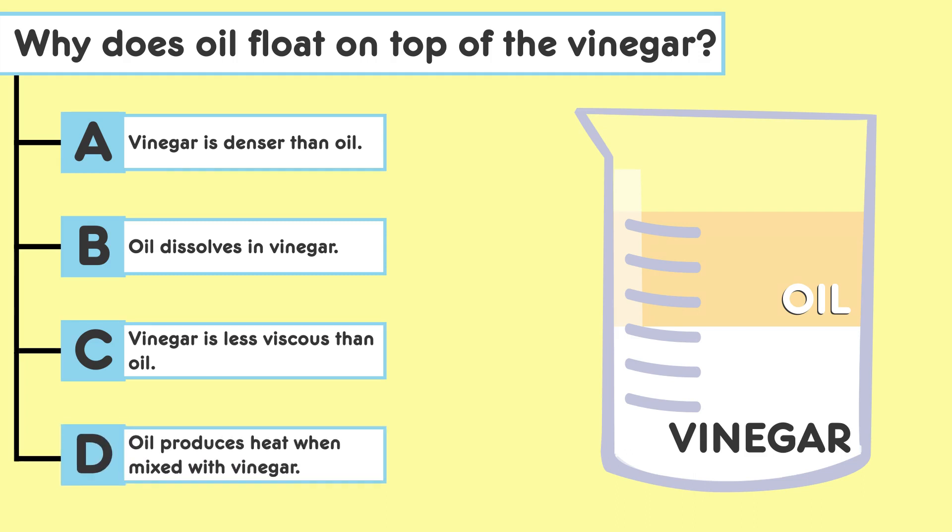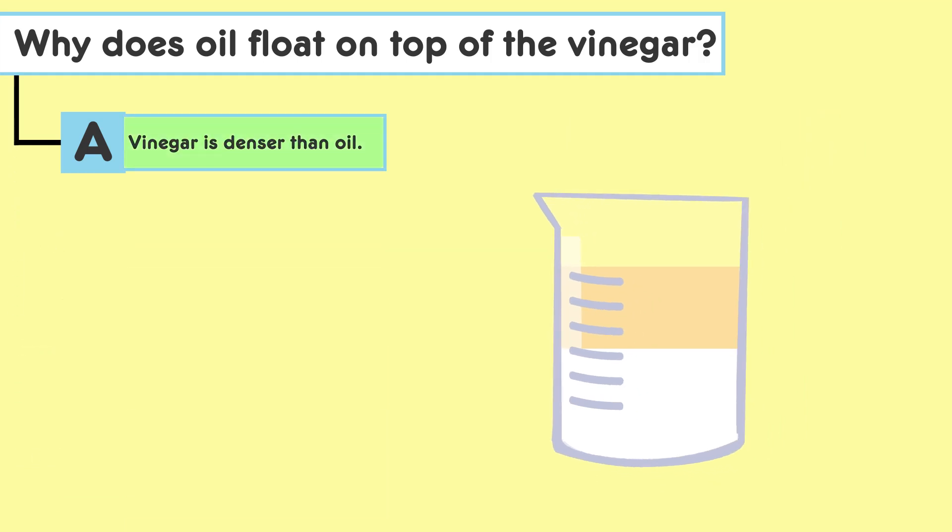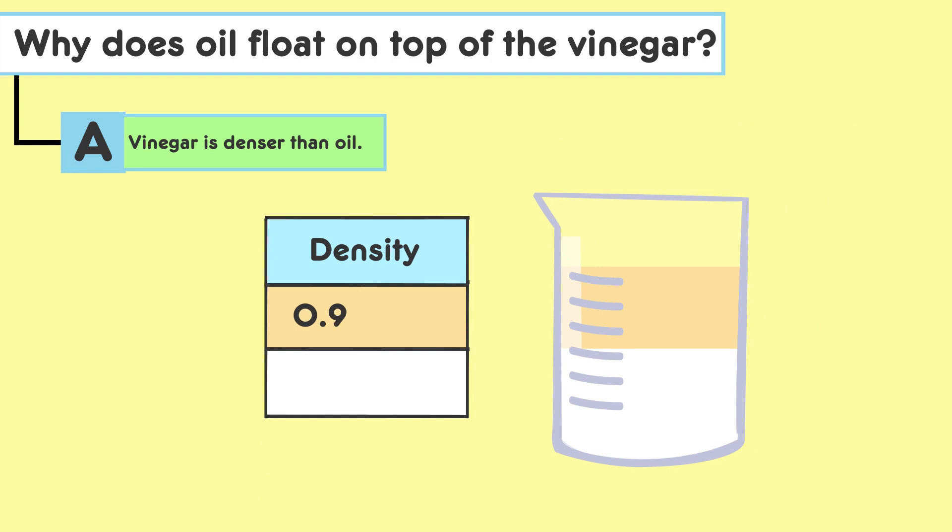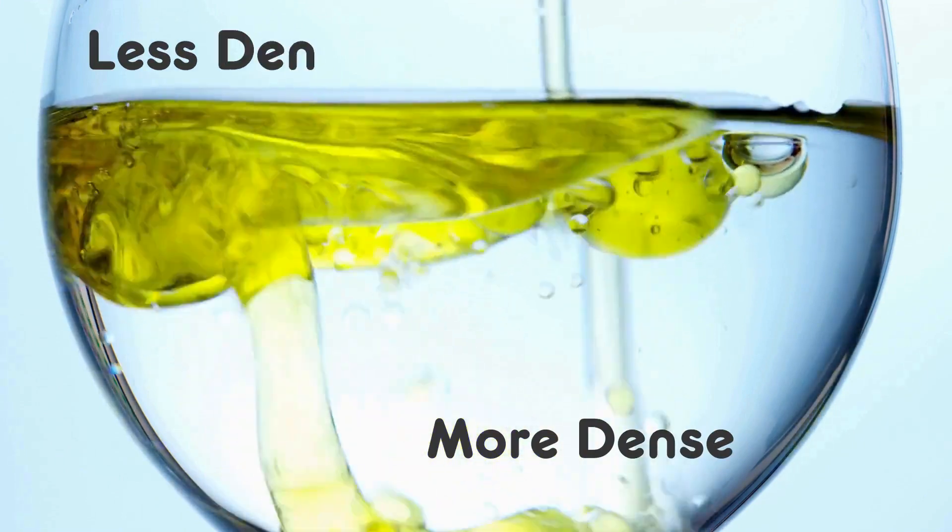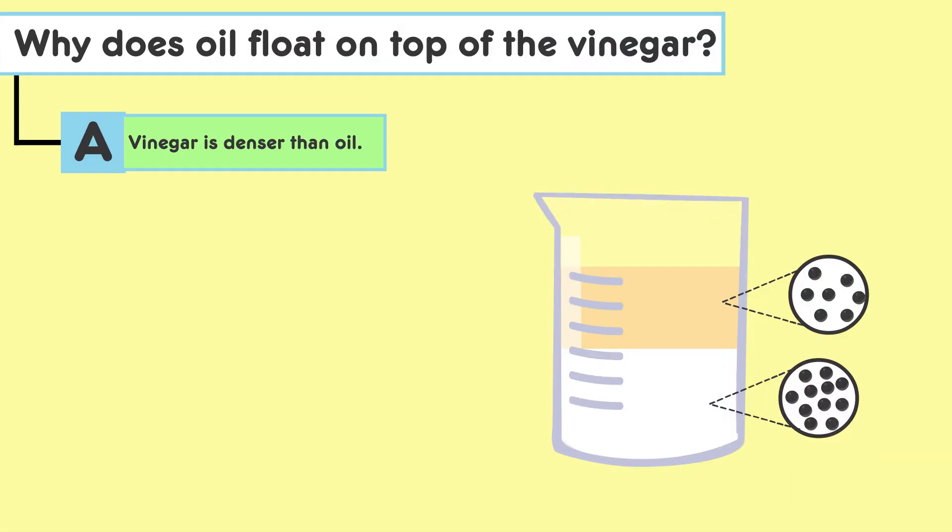Engage with these guiding questions for each choice. A. Vinegar is denser than oil. So let's investigate. Review the densities provided for both liquids. How does density affect their layering? Now let's analyze. Understand why density differences cause one liquid to float over another. Here's a tip. Denser liquids form a lower layer in a mixture, serving as a foundational principle in fluid dynamics.